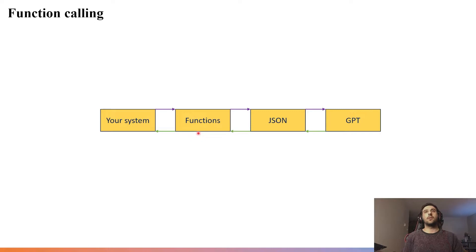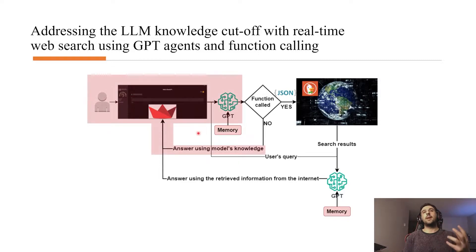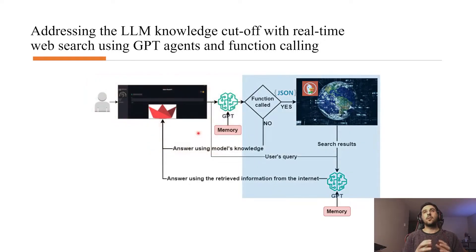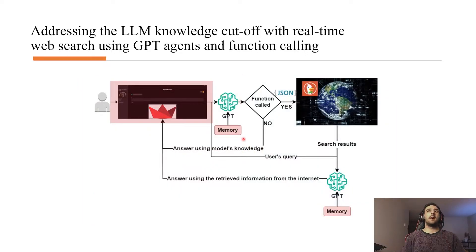Here's the design plan: First, I'll build the Streamlit user interface. Then I'll add a simple GPT model without function calling to verify interaction. After that, I'll add memory so the model can continue conversations. Finally, I'll add the function calling backend — and then we'll have the complete chatbot together.